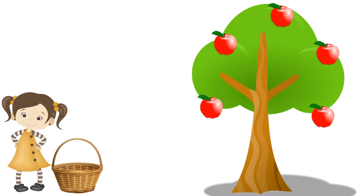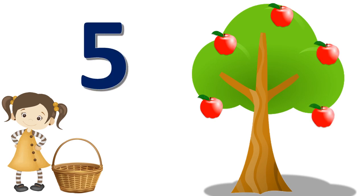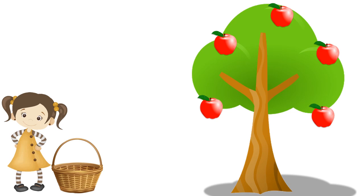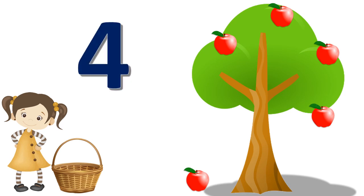Here this little girl wants to collect the apples from the tree. Now let's count the number of apples: one, two, three, four, five. So there are five apples on the tree. Now consider one apple falls off from the tree. Let's count: one, two, three, four. So there are four apples on the tree.